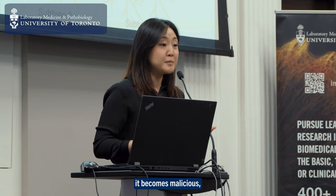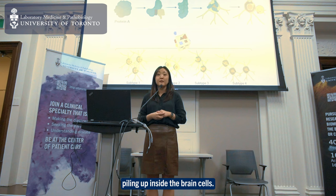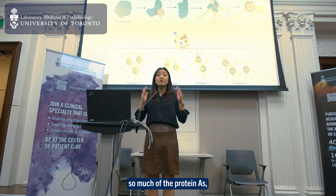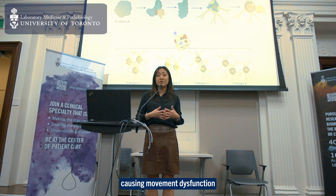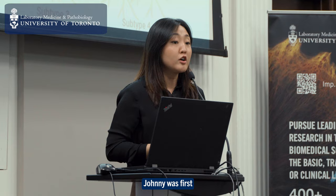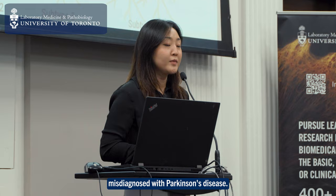Once the protein A's take on a different shape than the normal protein A's, it becomes malicious, piling up inside the brain cells. And when these cells accumulate so much of these bad protein A's, the cells can become sad, causing movement dysfunction like Johnny had.